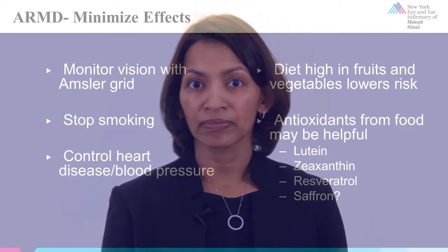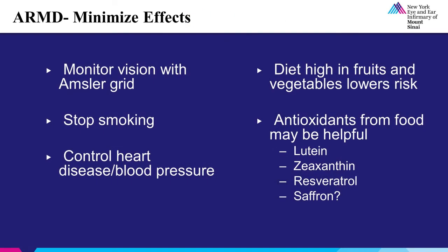With regards to reducing the risk of macular degeneration, or the progression of dry early macular degeneration to more severe vision loss from wet macular degeneration, monitoring vision daily with an Amsler grid is recommended. It is also recommended that the patient cease smoking and control other risk factors, including heart disease and monitoring of blood pressure. A diet high in fruits and vegetables may also help lower the risk, particularly those foods rich in antioxidants. Certain supplements — such as lutein, zeaxanthin, resveratrol, and saffron — may be beneficial in slowing the progression of dry macular degeneration.